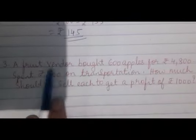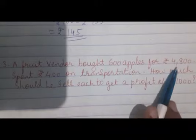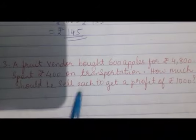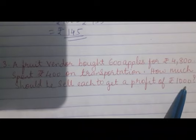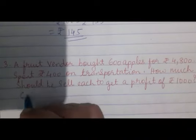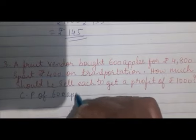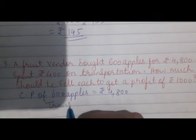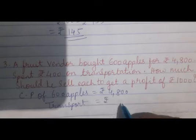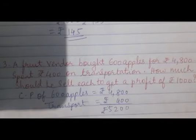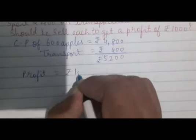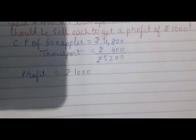Next question. A fruit vendor brought 600 apples for 4,800 rupees. He spent rupees 400 on transportation. How much should he sell each to get a profit of 1,000 rupees? First, the cost price of 600 apples is 4,800 rupees. He added the transportation charges of rupees 400. So it became 5,200 rupees. Then he earned a profit of 1,000 rupees.